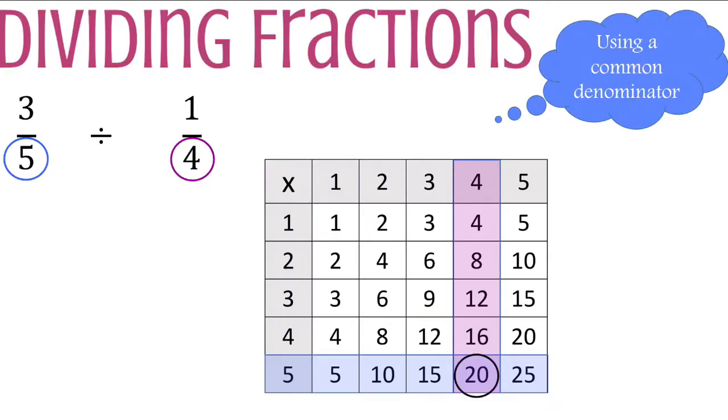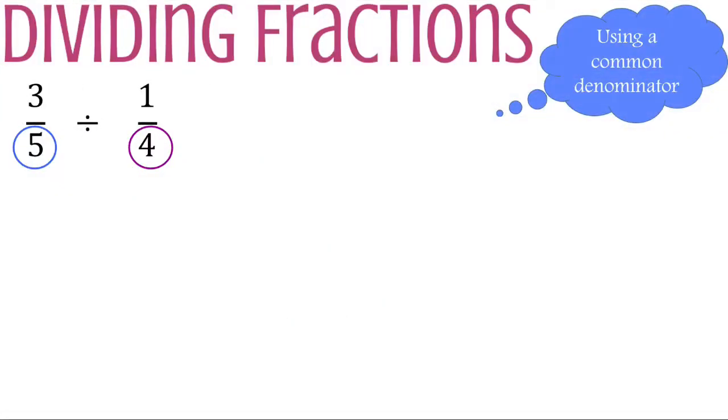Once I find a common denominator I can create equivalent fractions. To create an equivalent fraction I will set up a proportion. This gives me my original fraction of three-fifths and what I'm trying to get is a denominator of 20. The math that I would need to do here is multiply by four. I multiply the denominator by four. I will also multiply the numerator by four so that they stay equivalent.